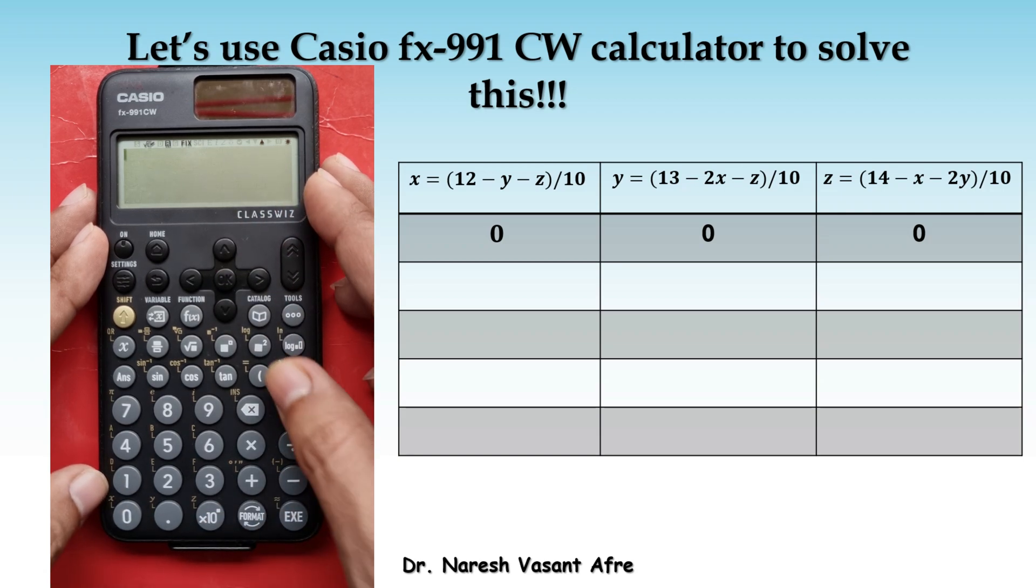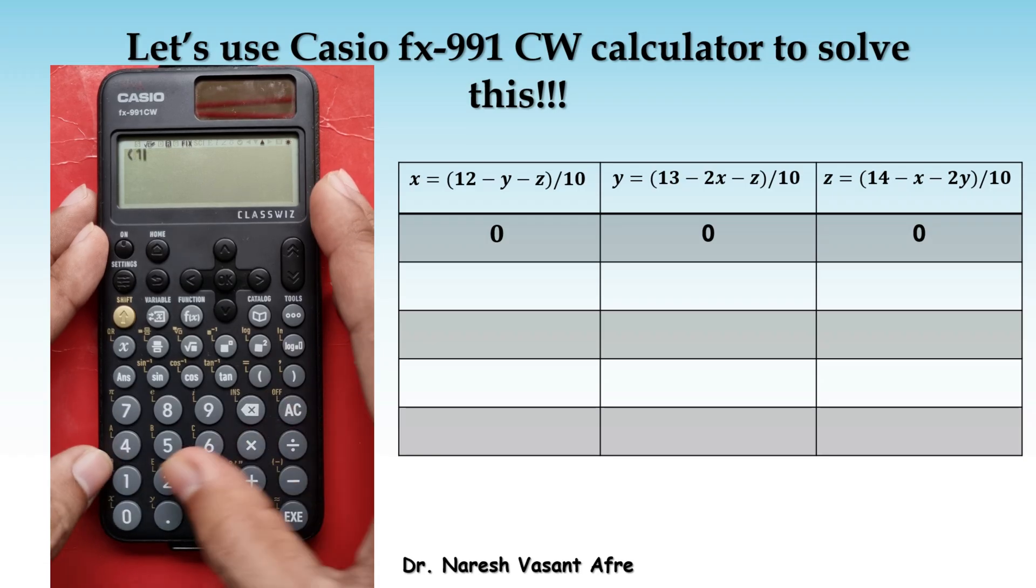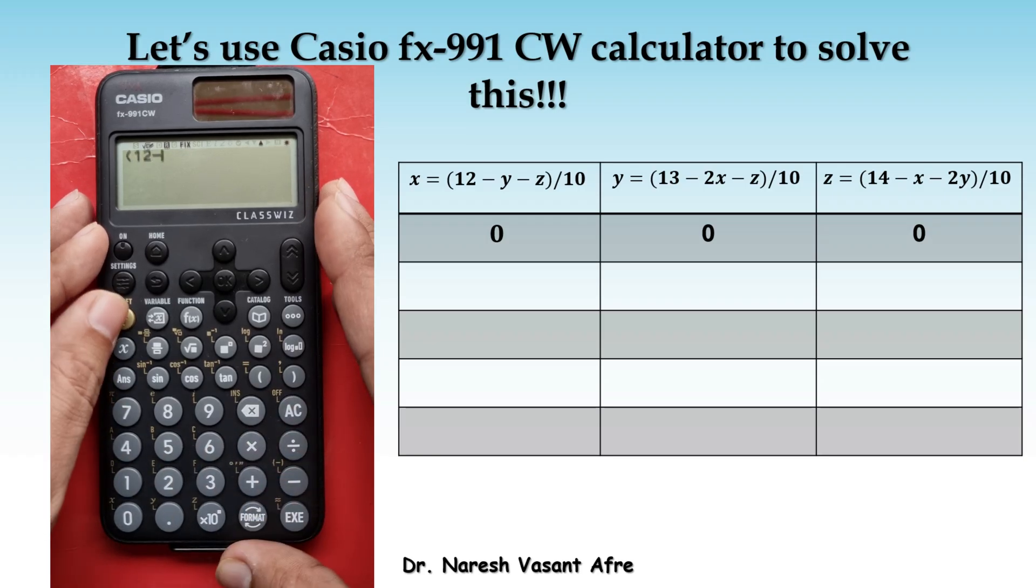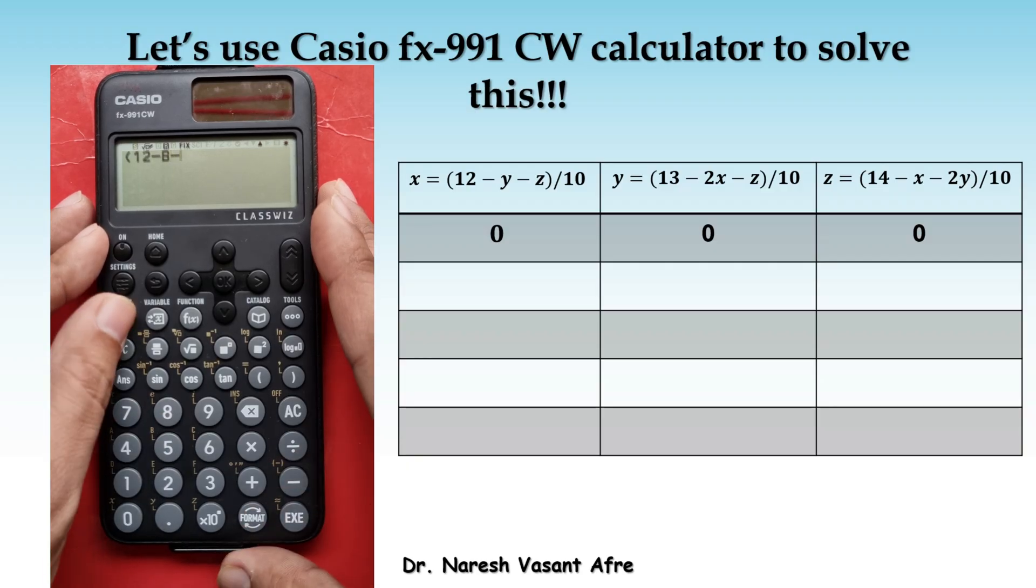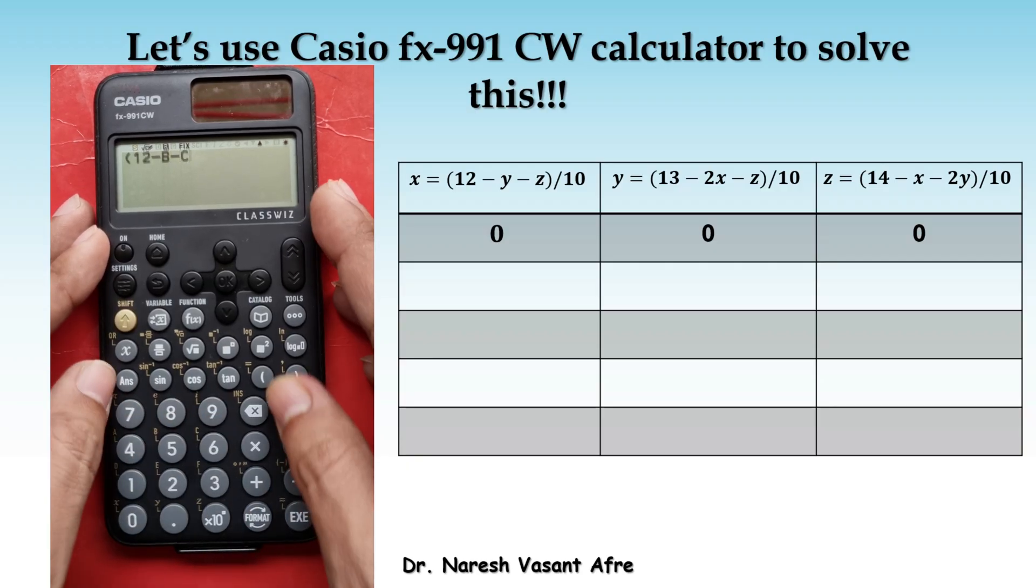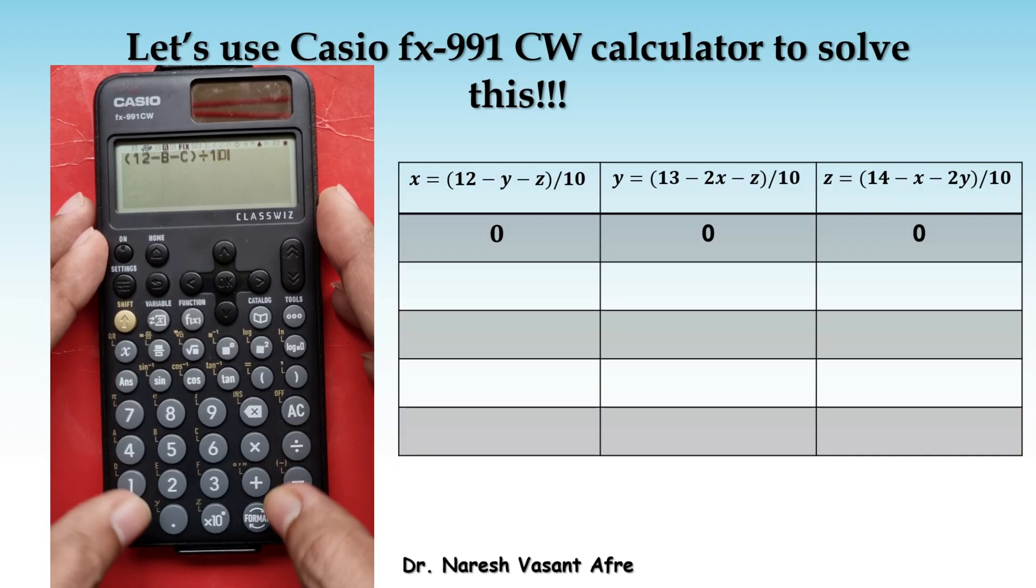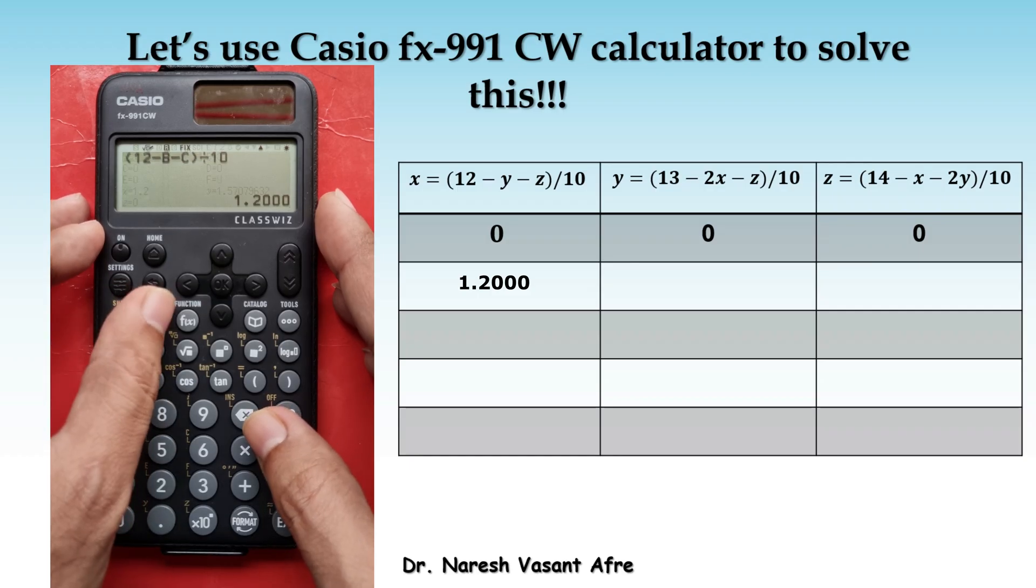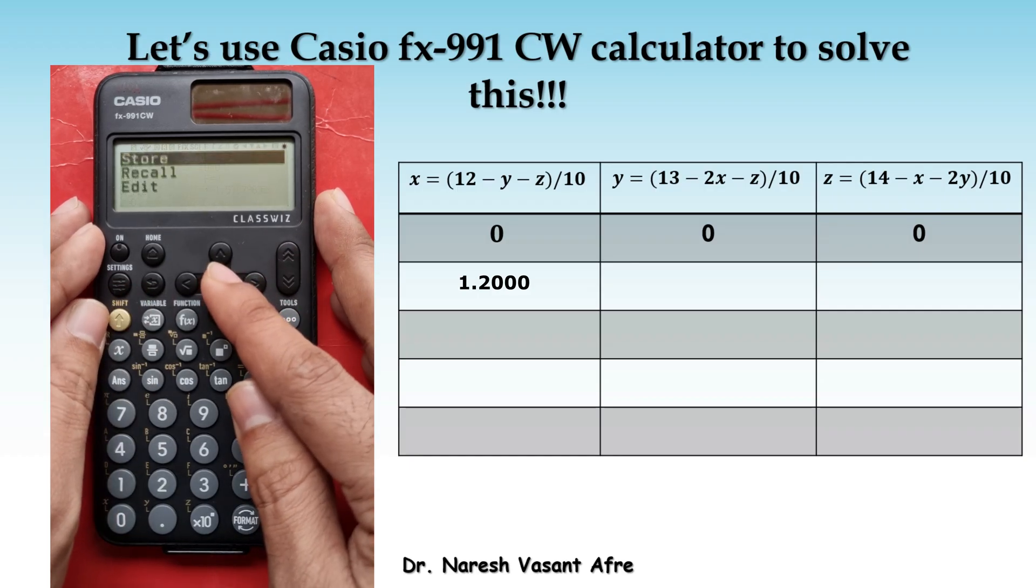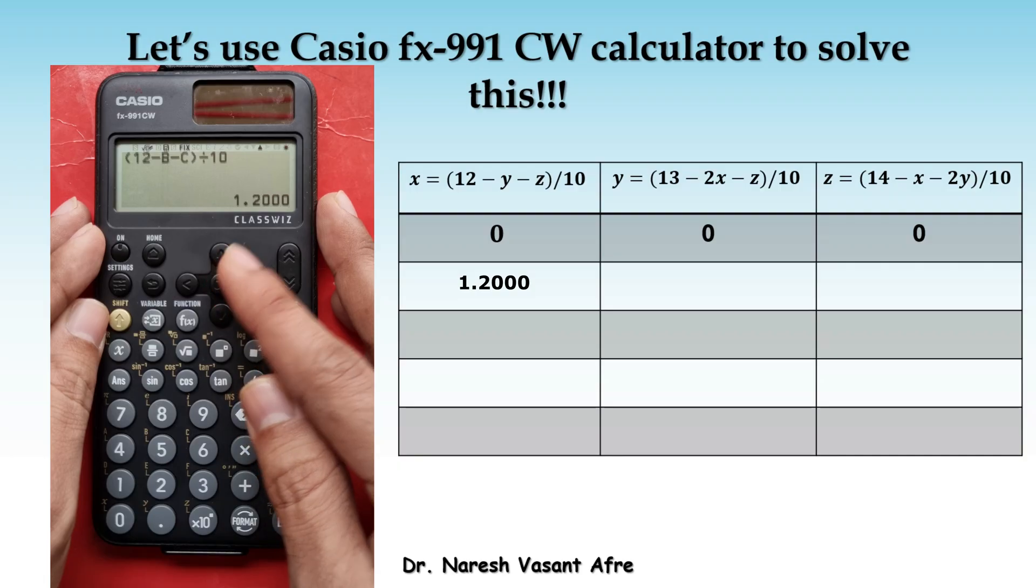Next, we compute the first iteration value of X and that can be computed by 12 minus Y but value of Y is stored in B. So, 12 minus B minus Z but the value of Z is stored in C divided by 10. This will give you the first iteration value of X and that is 1.2. We are going to store this new value of X in A back to update the value of A.